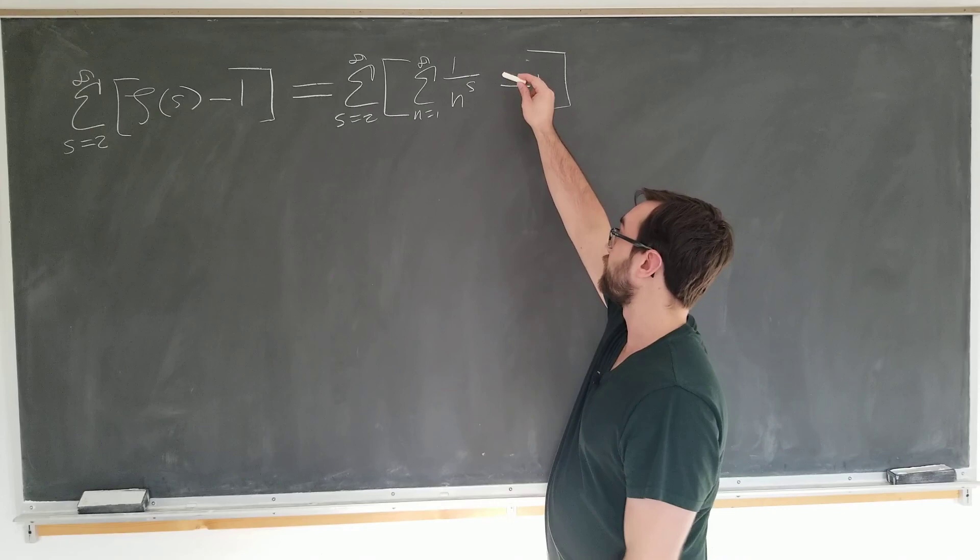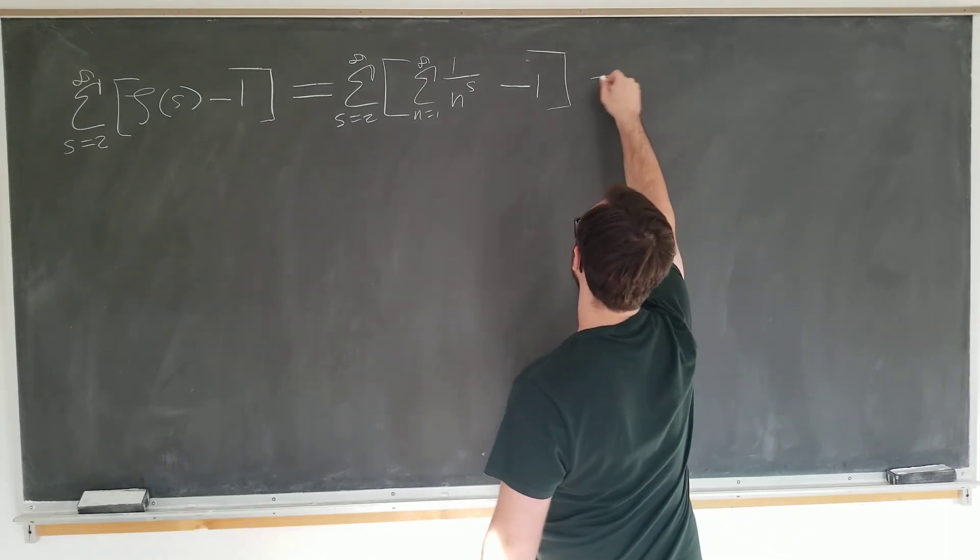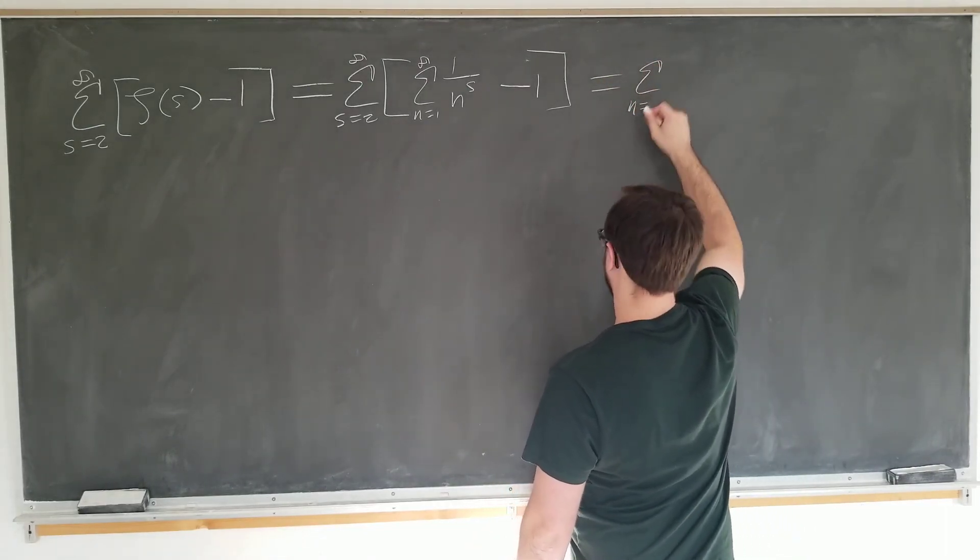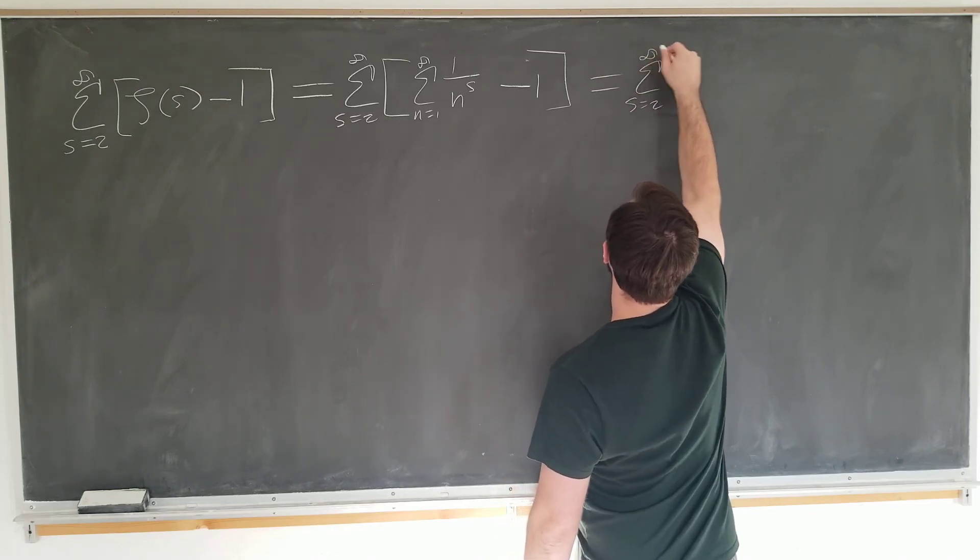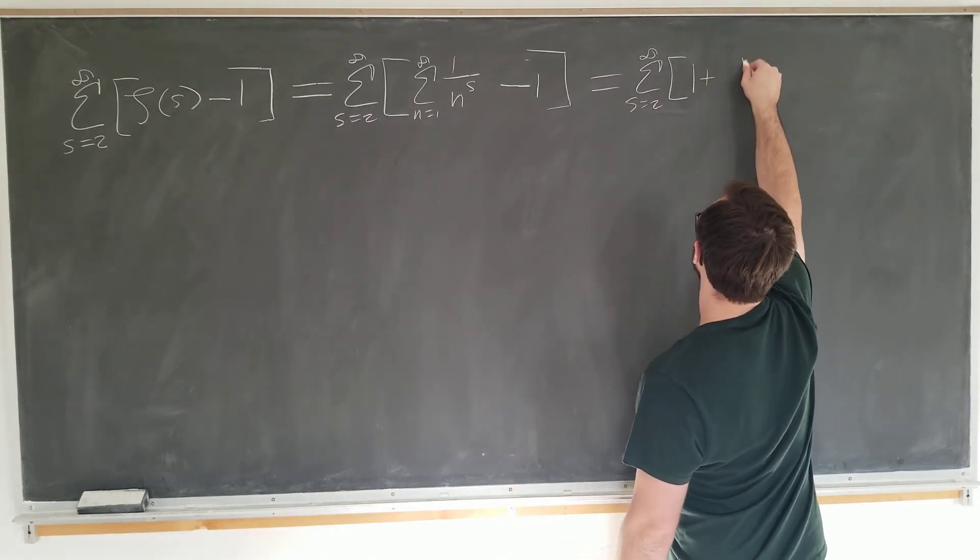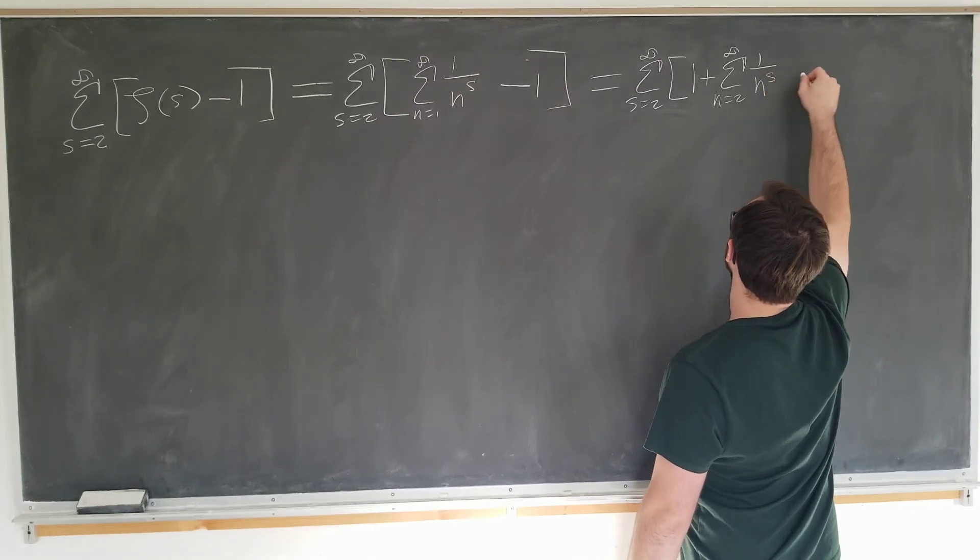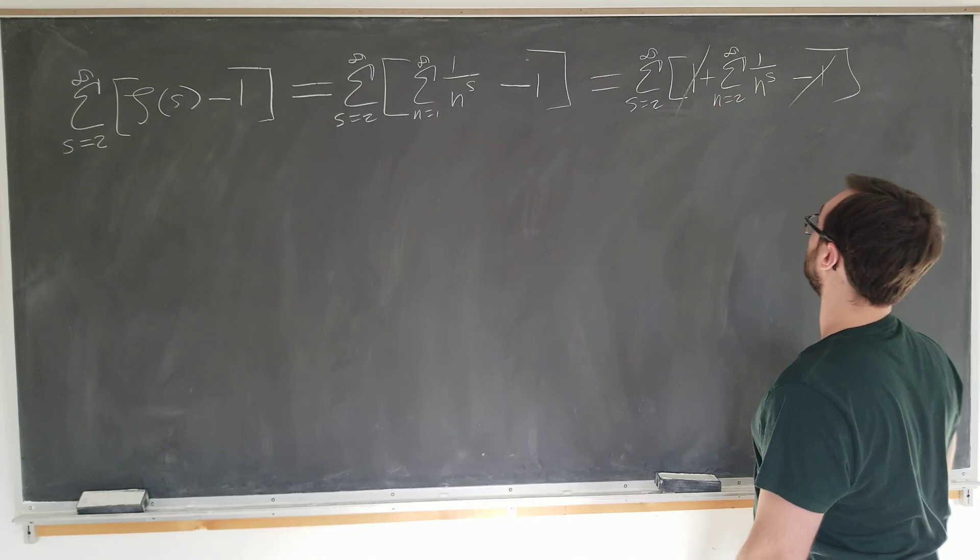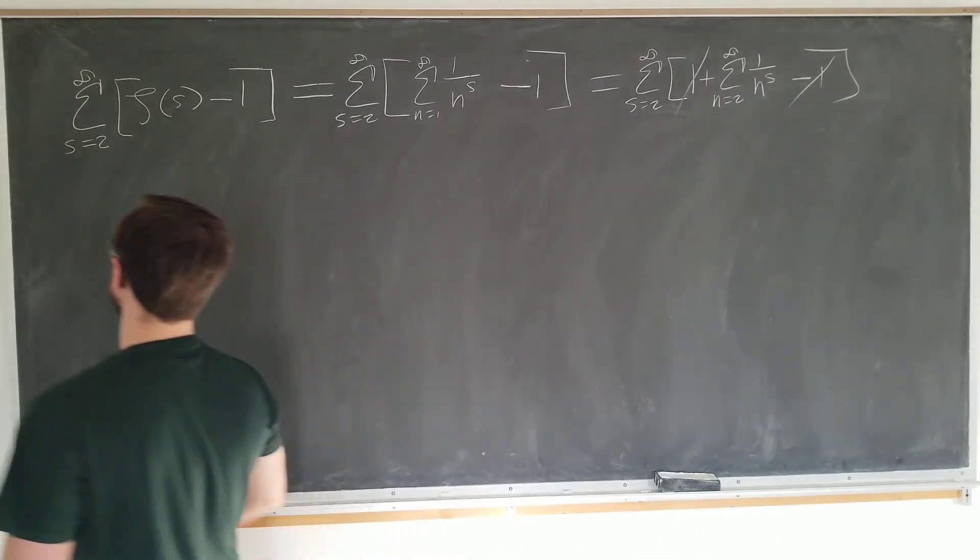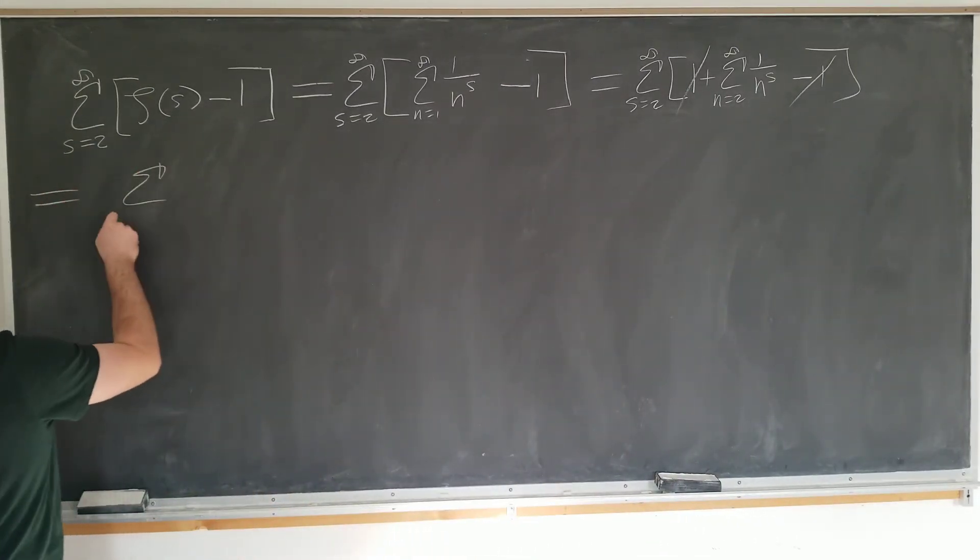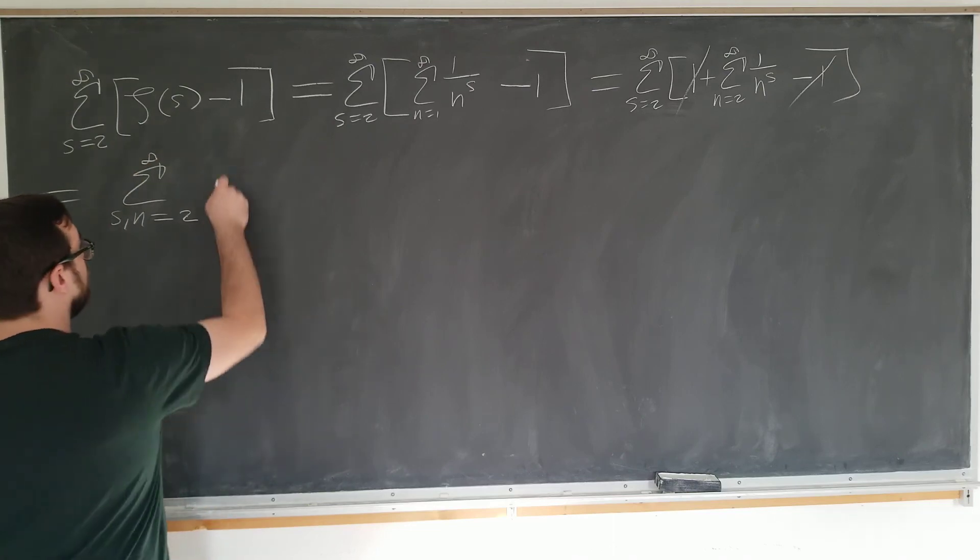First thing we want to do is notice that this sum actually contains the number 1, which can combine nicely with this number 1. Sum from s goes from 2 to infinity of 1 plus summation as n goes from 2 to infinity now of 1 over n to the s minus 1. We see we have the minus 1's canceling nicely. We can combine these single sums into a double sum now since there's only one index.